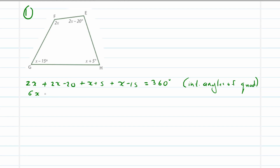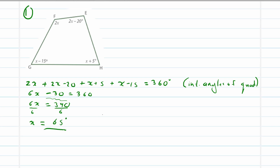Combining like terms: 2x + 2x + x + x = 6x, and −20 + 5 − 15 = −30. So 6x − 30 = 360. Adding 30 to both sides gives 6x = 390. Dividing both sides by 6, therefore x = 65 degrees.